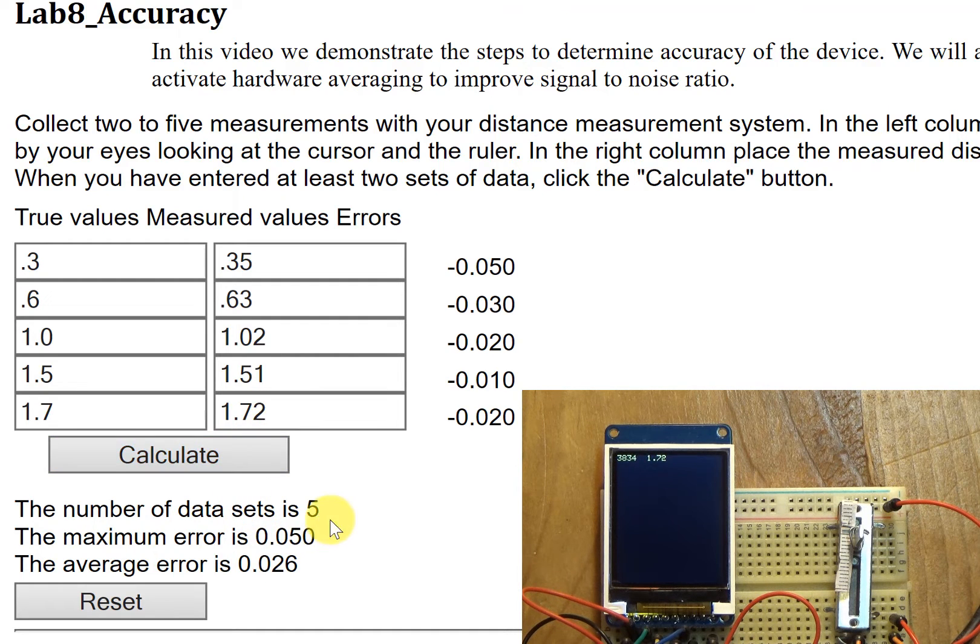I'm going to hit calculate. I have five data points. The largest error was 0.05 and the average error was 0.026 centimeters. This is accuracy either in maximum error or in average error.